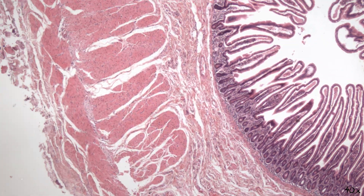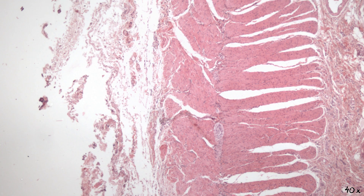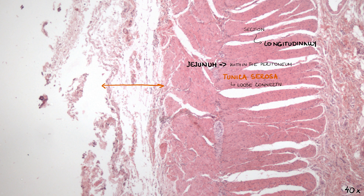The structure of the wall is identical to the duodenum, and this section was once again performed longitudinally. The jejunum is located within the peritoneum and is covered by serosa. Serosa is made of loose connective tissue covered by a simple squamous epithelium, the mesothelium, though it cannot be seen clearly in this section.